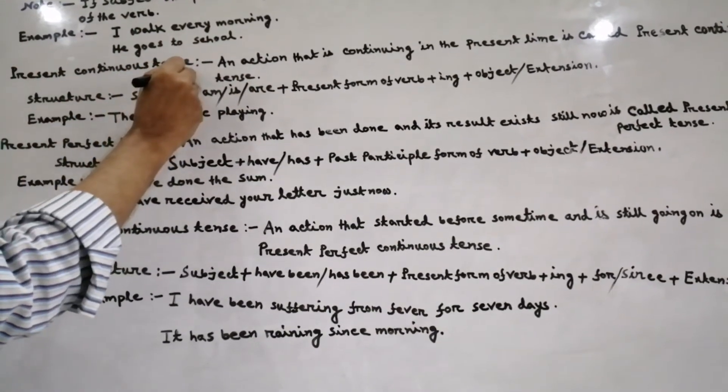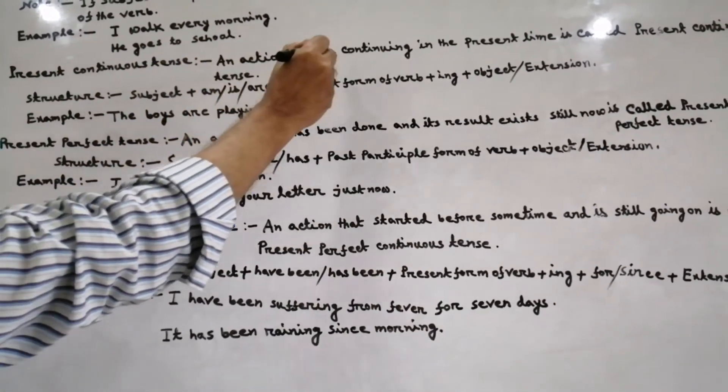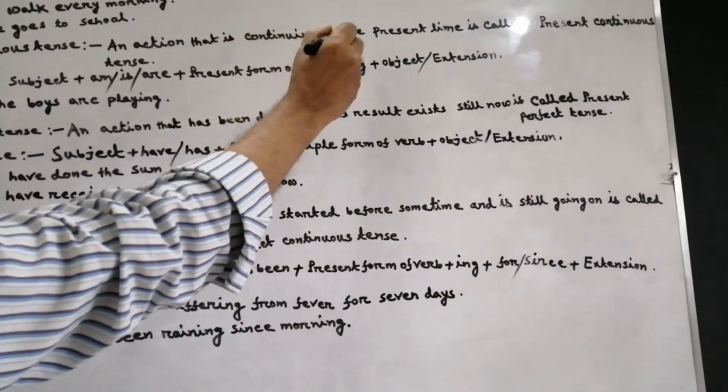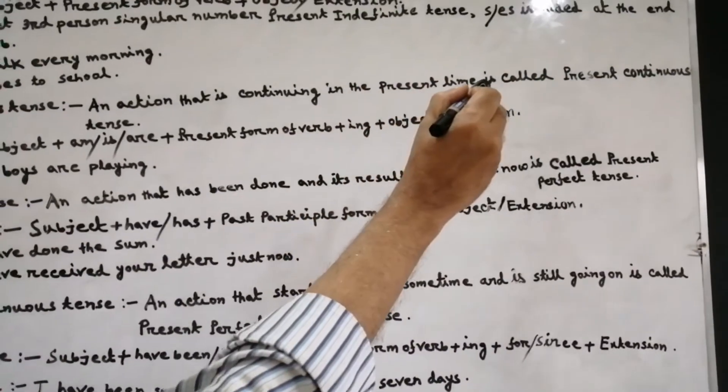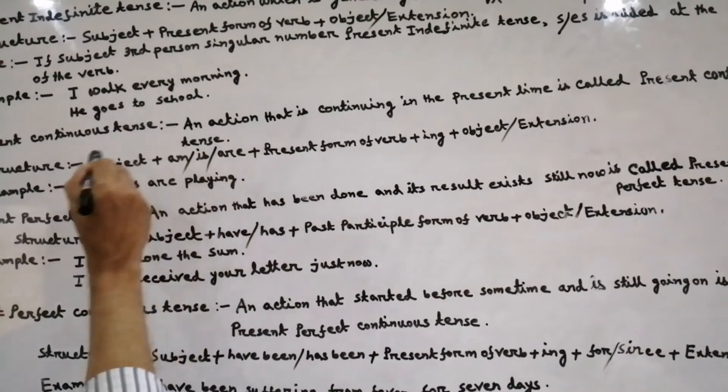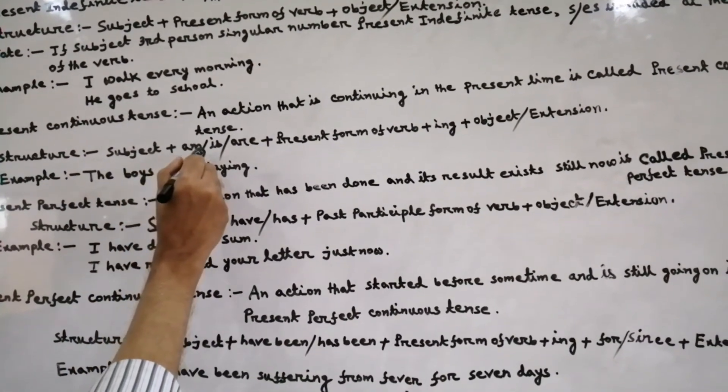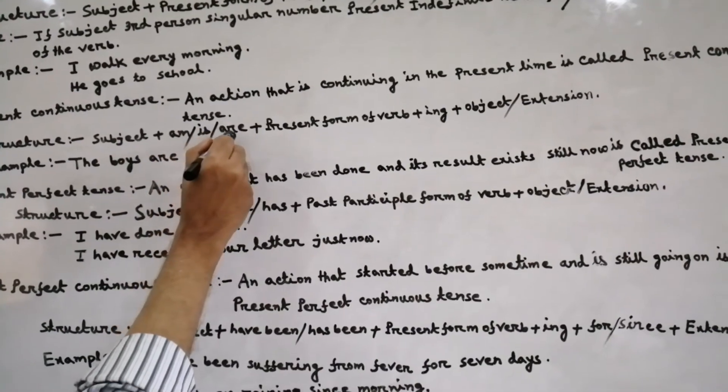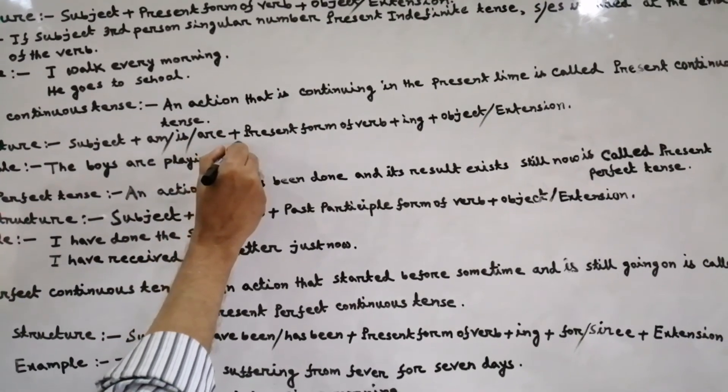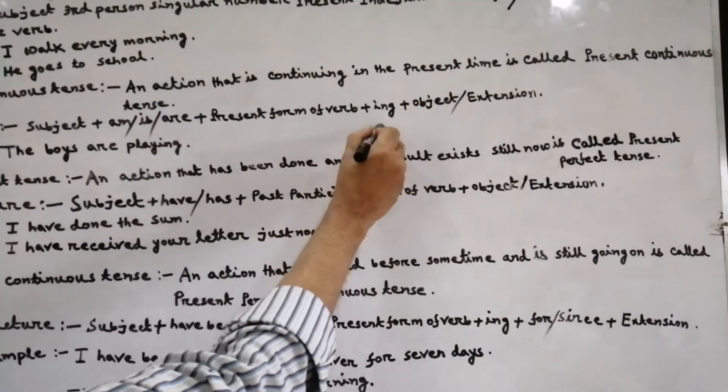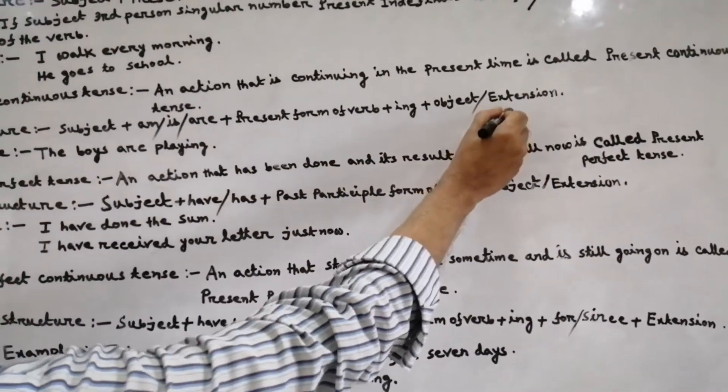Present continuous tense - an action that is continuing in the present time is called present continuous tense. Structure: subject plus am or is or are plus present form of verb plus ing plus object or extension.